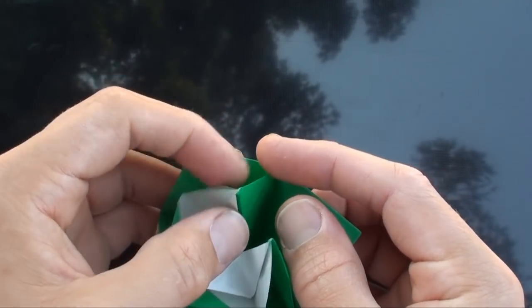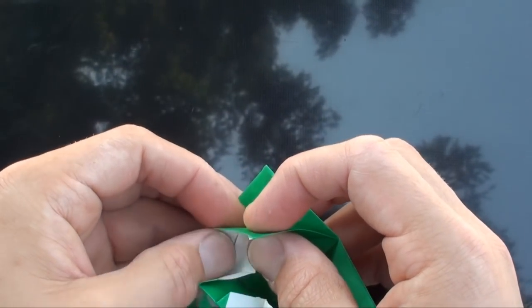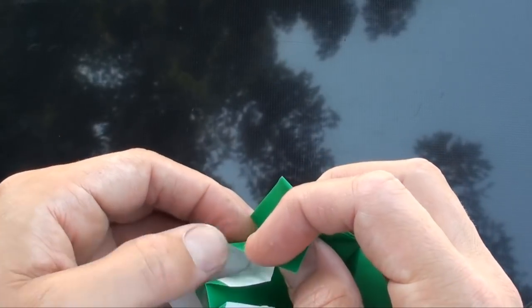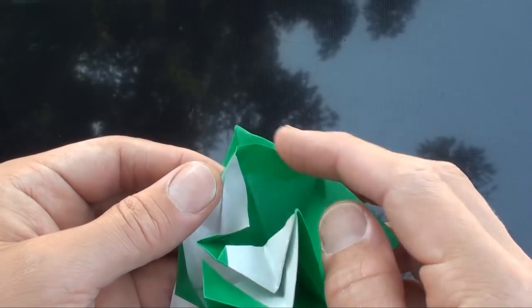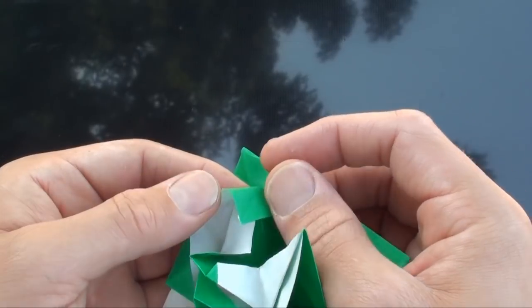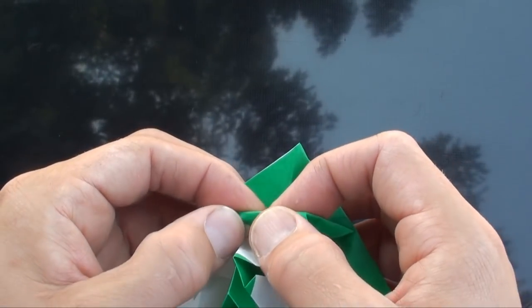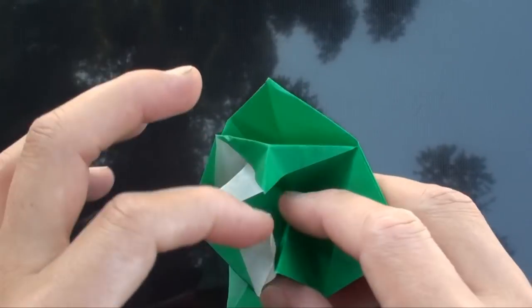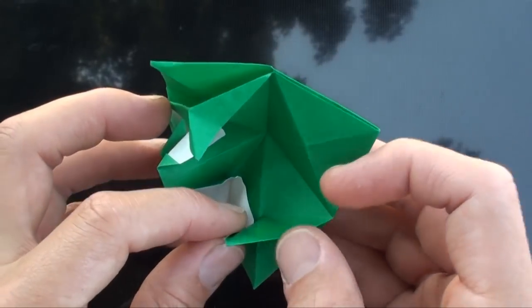Now we're going to do another reverse fold. Outside reverse folds so we can... This edge goes to the crease. And again over here. So we're outside reverse folding it. This edge goes to the crease.